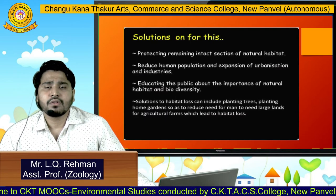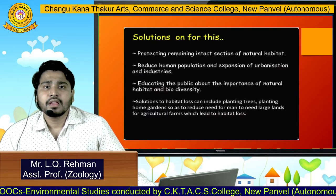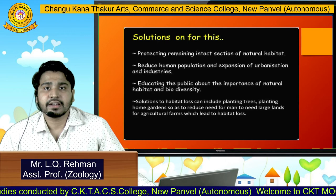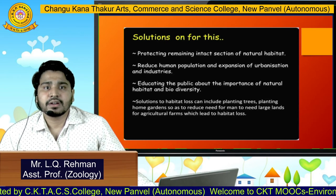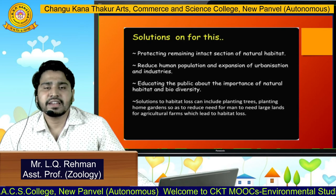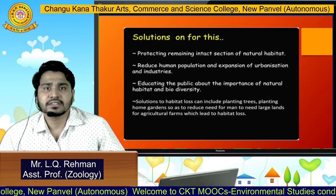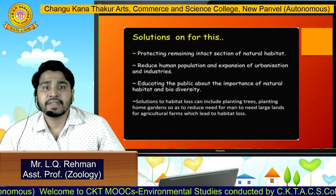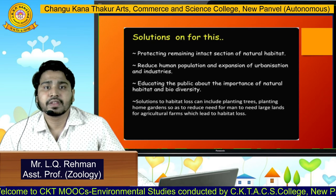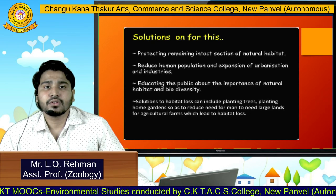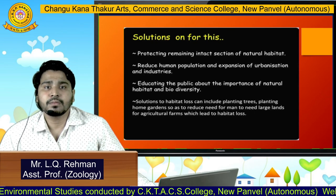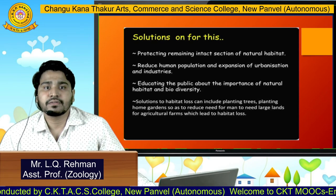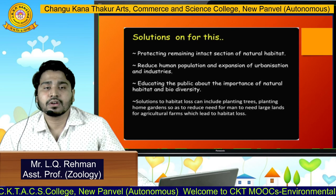What are the solutions for this? Protecting remaining intact sections of natural habitat is very important. Human population should be controlled, and expansion of urbanization and industries into forest lands should be controlled. We have to educate the public about the importance of natural habitat and its biodiversity. Solutions can also include planting trees and home gardens, so as to reduce the need for large agricultural lands, which may lead to habitat loss.